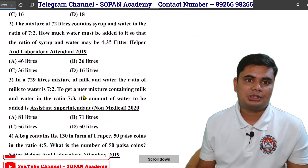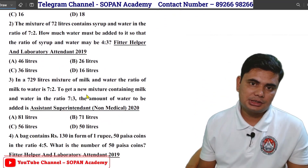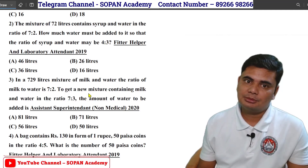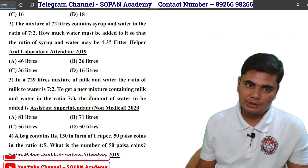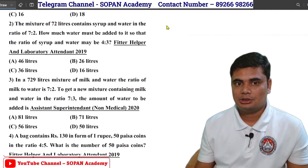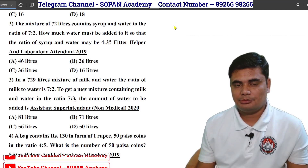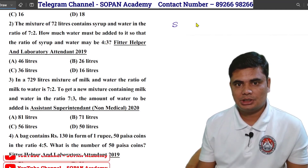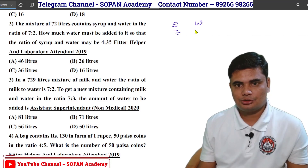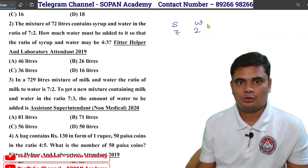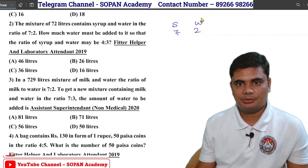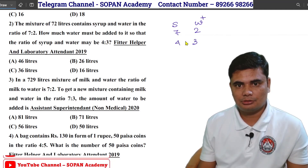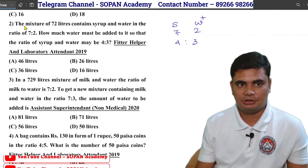The mixture of 72 liters contains syrup and water in the ratio 7 is to 2. How much water must be added so that the ratio of syrup and water could be 4 is to 3?